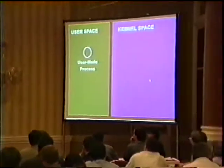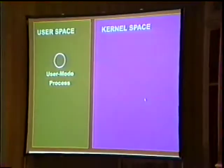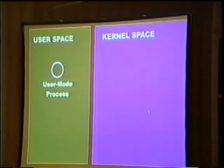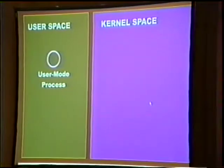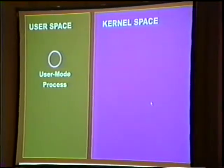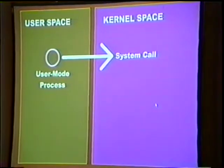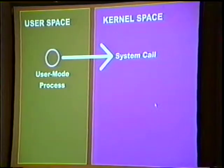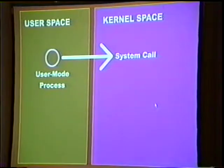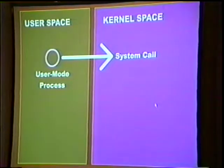Here's the essential problem. A user mode process, to do anything on the system — even talk to other user mode processes — has to go through kernel space. It usually does this via a system call, though it can also do it through other methods like an ioctl. The system call is the primary mode of communication between user mode and kernel space, and this is usually handled through an interrupt.